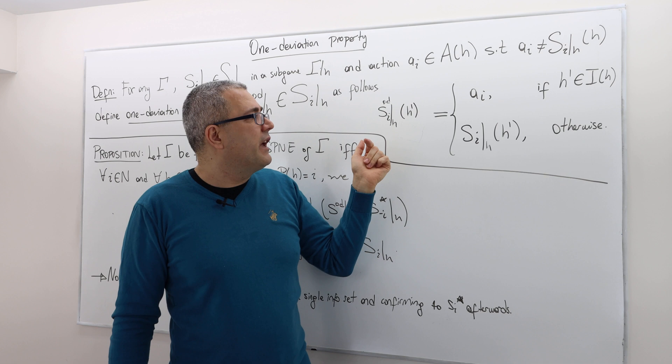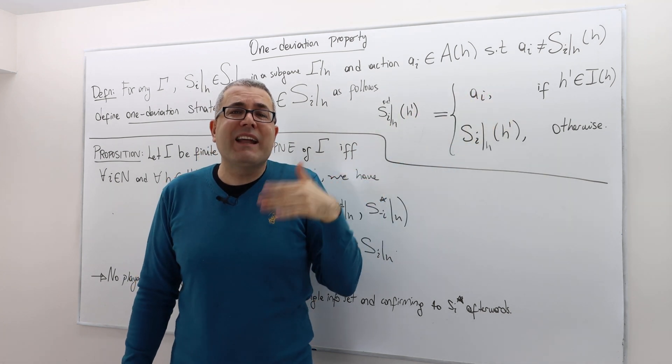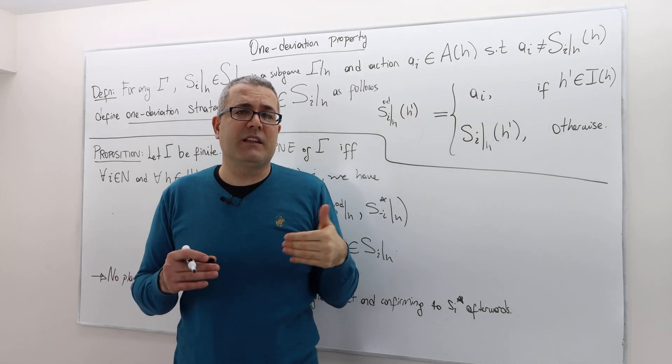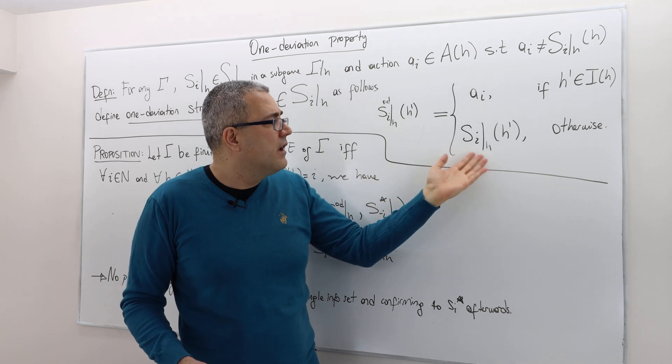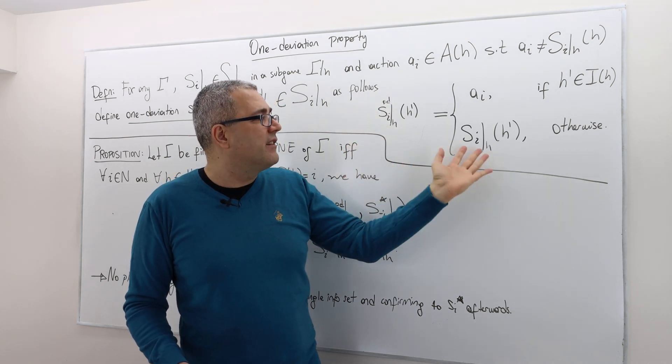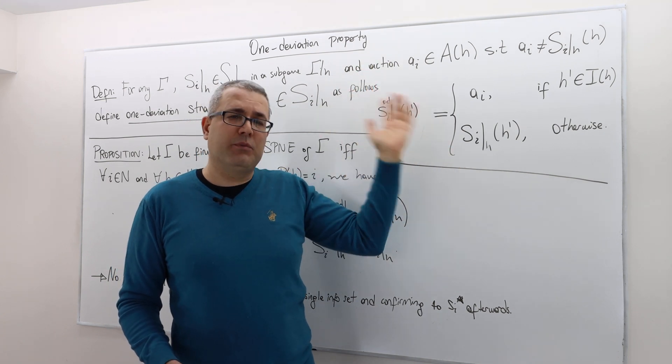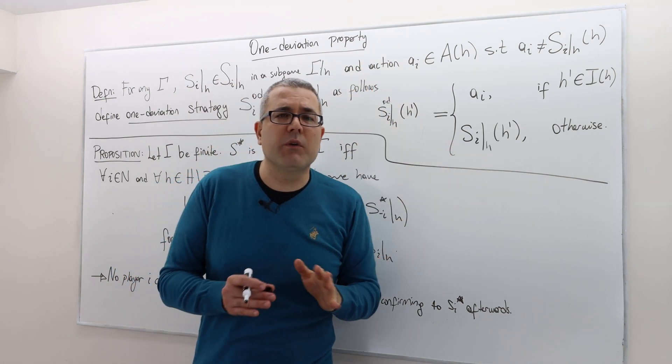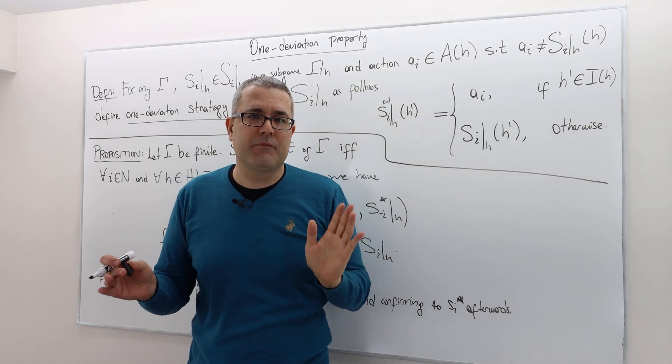However, if history H prime is not in the same information set of H, then the one deviation strategy and the player's original strategy are going to be exactly the same.